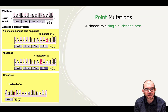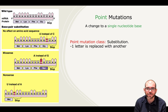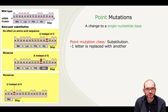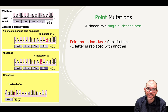A point mutation is a type of mutation that causes a change to a single nucleotide base, and there are a variety of them. The first one we're going to look at is something called a substitution — when only one DNA nucleotide is replaced with another DNA nucleotide. These can have dramatically different effects.